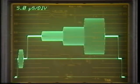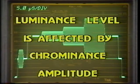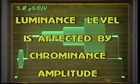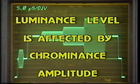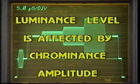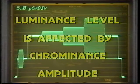Chrominance to luminance intermodulation is the final distortion in this group. This distortion is present when luminance amplitude is affected by the amplitude of the superimposed chrominance. The luminance change might be caused by clipping of the chrominance, quadrature distortion, or crosstalk between luminance and chrominance. In any case, the presence of chrominance has affected the luminance level.